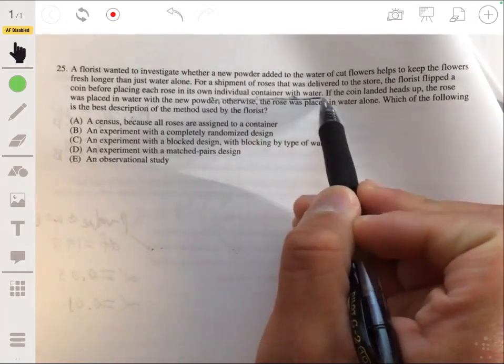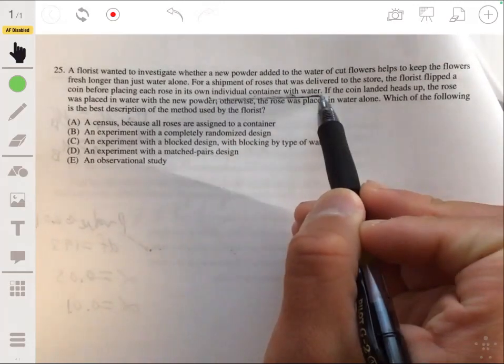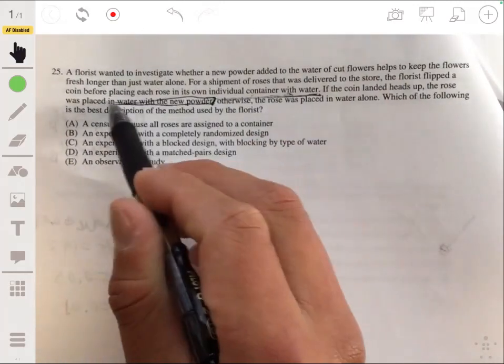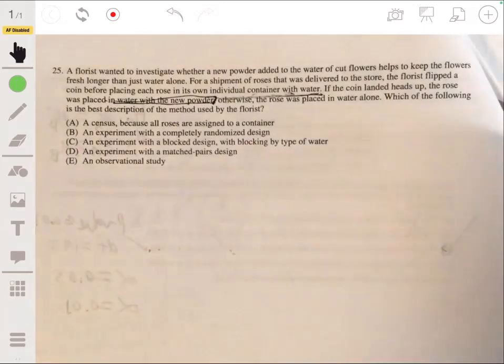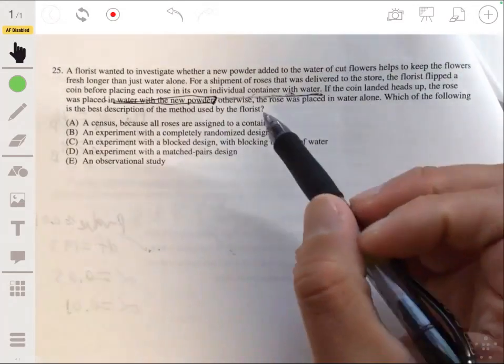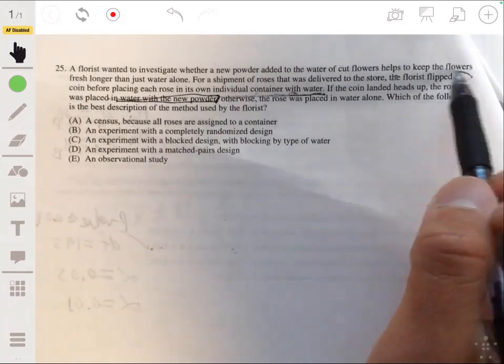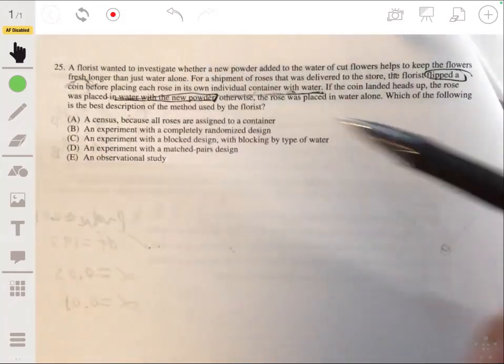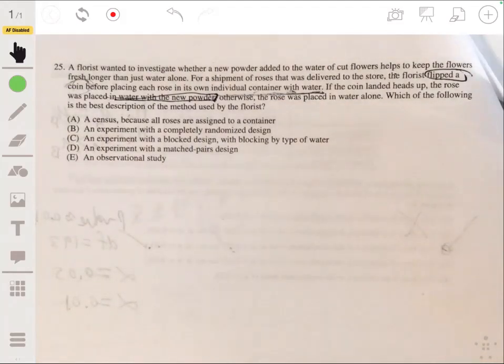One was just in a container by itself with water. And the other one was with water and a new powder. So those are basically the two treatments you got going on here. And the way he chose that was just by flipping a coin.